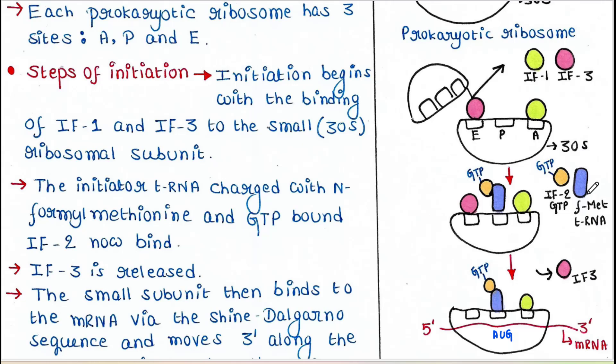So the tRNA and GTP-bound IF2 bind the P site. Once they bind, IF3 gets released.